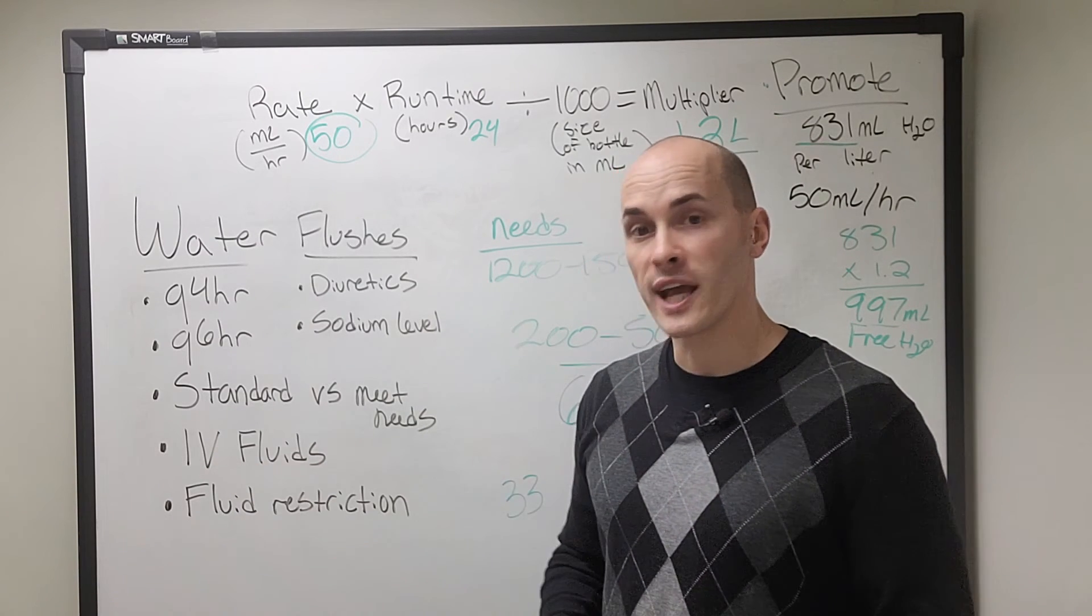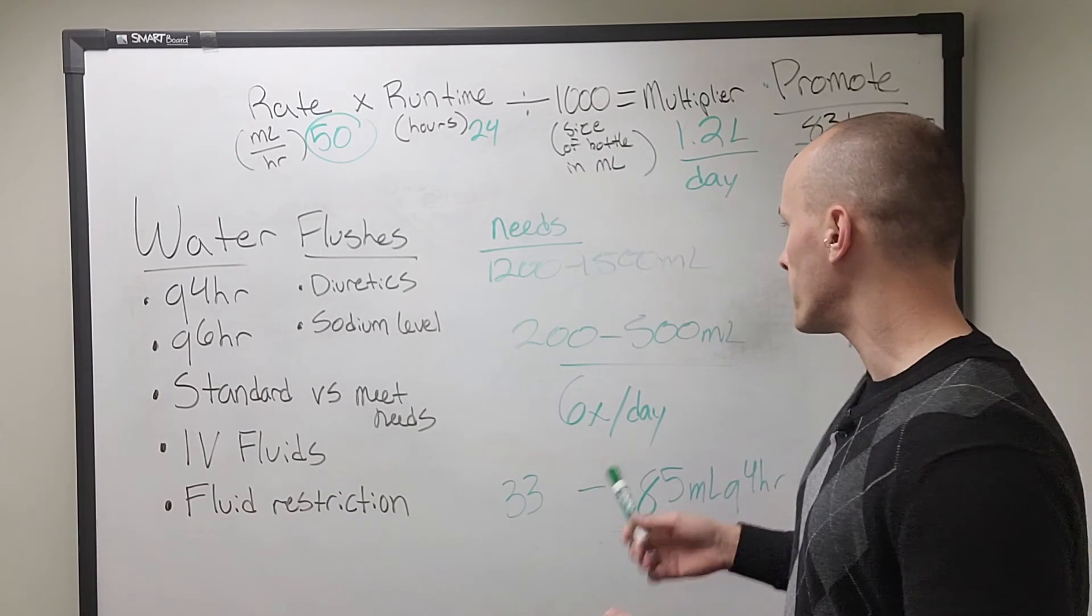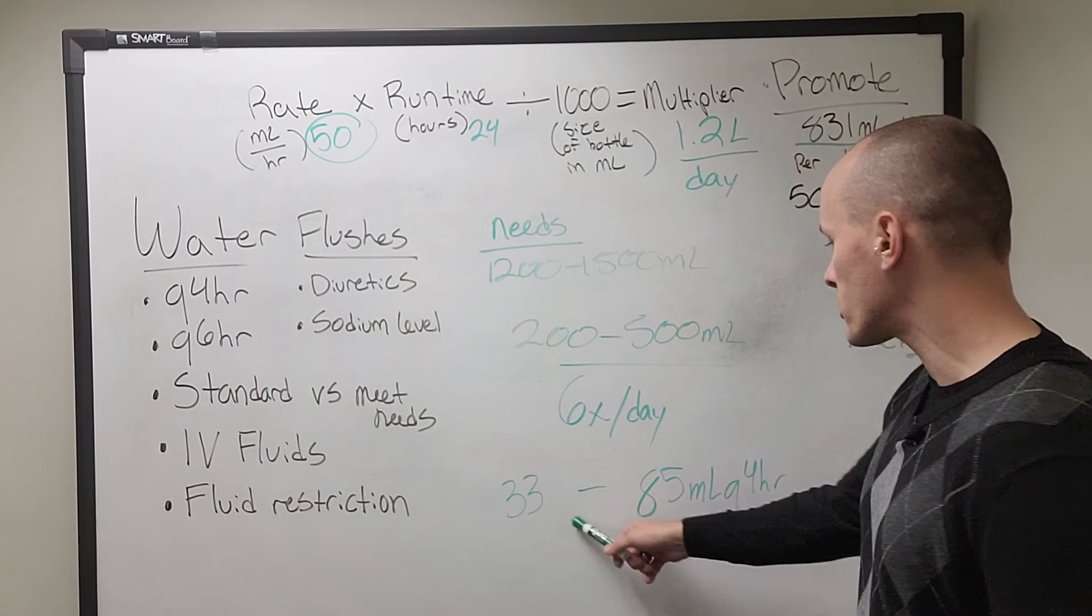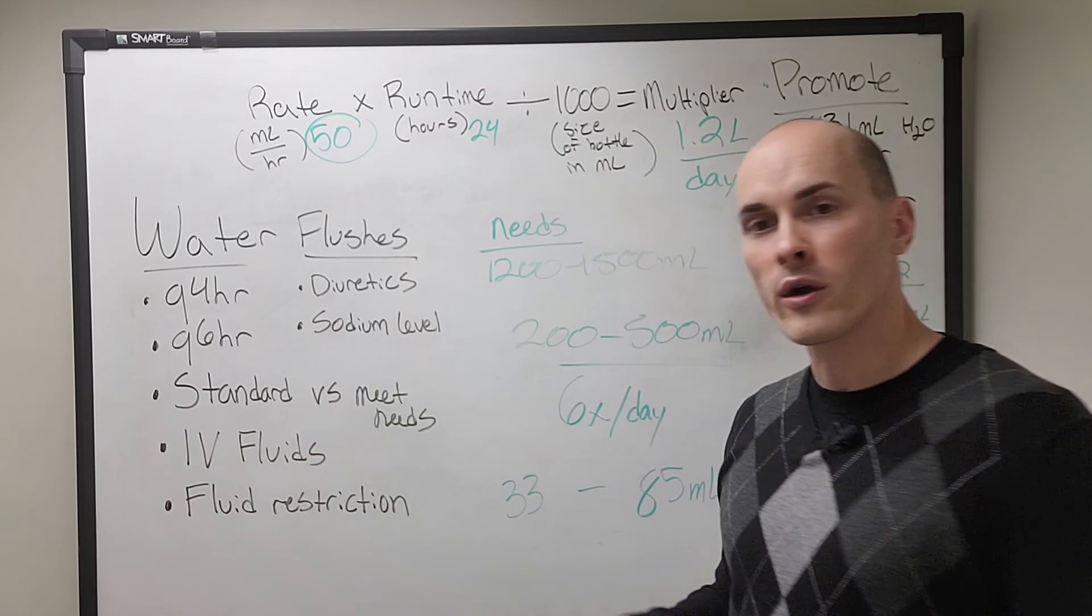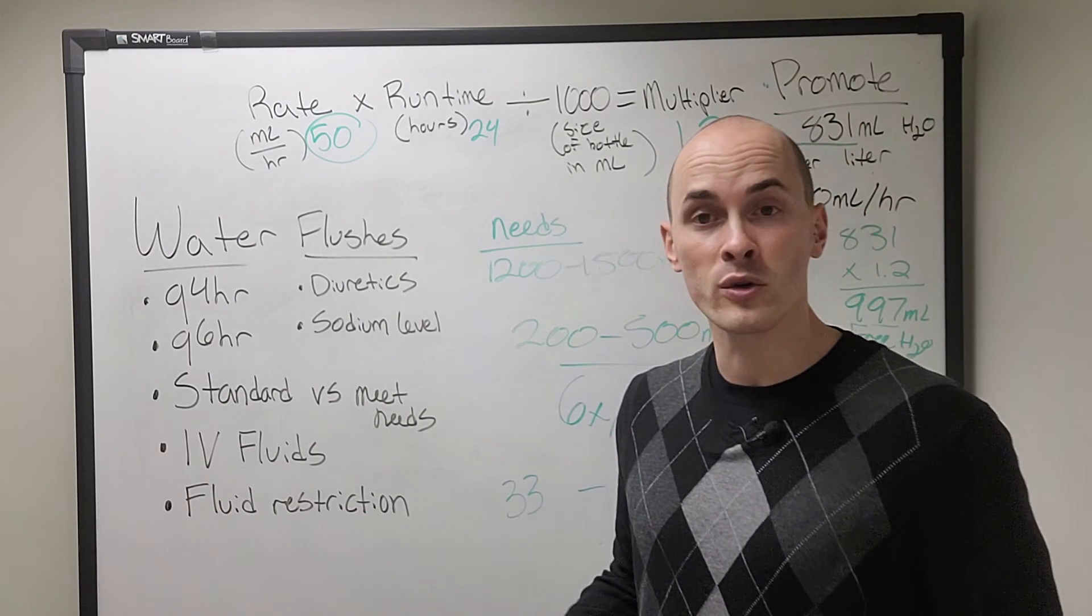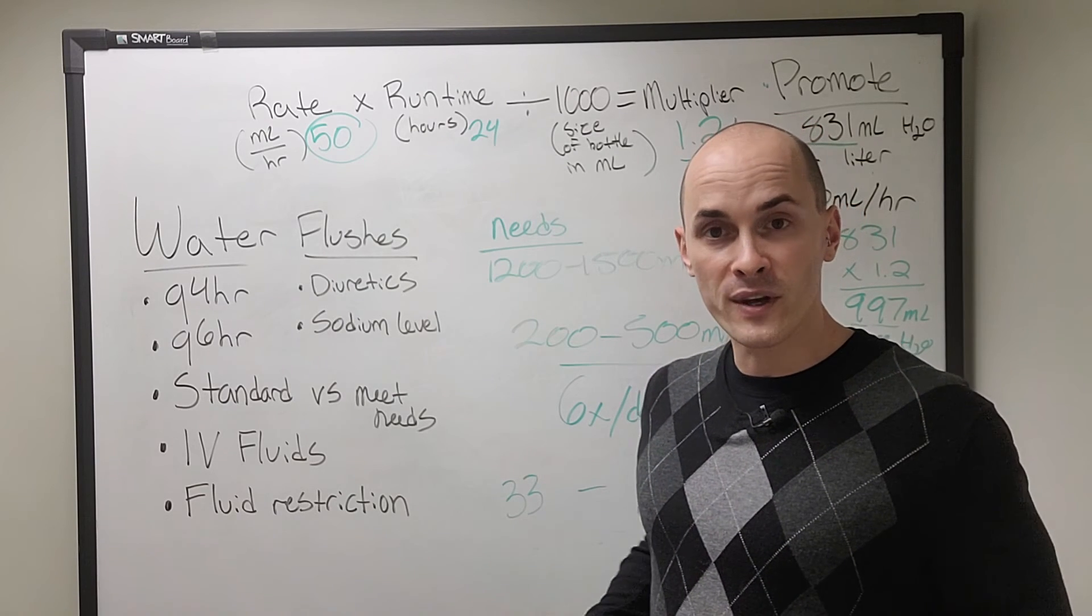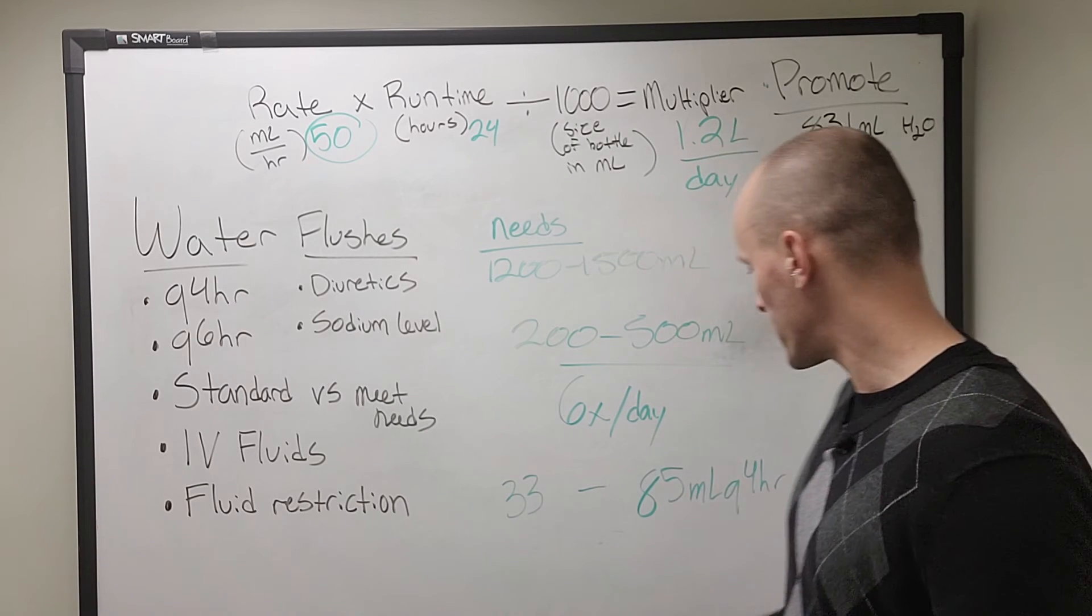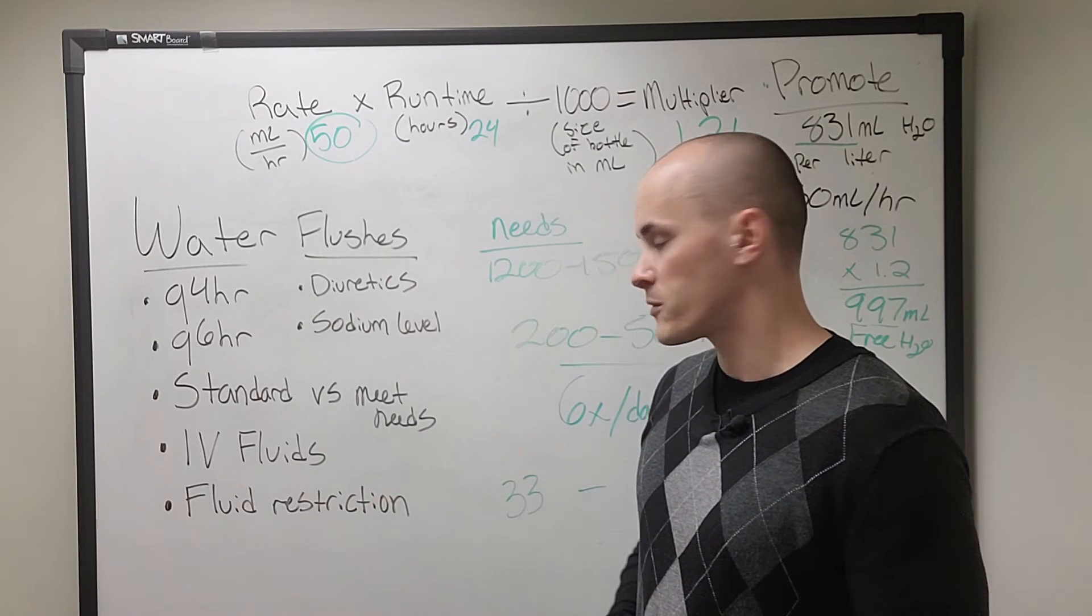As I mentioned earlier, we could do standard flushes or we could meet their needs. For this person, let's say they're NPO, but sips of water. Okay. And they're drinking a little bit of fluid. I'd be okay with our standard 60 mil flushes Q4 hours. Or if they're on the medical floor and they don't have a lot of IVs, and they're not getting a ton of additional fluid intravenously, and they're really relying on their feeding tube to give them all of their needs, then I'm actually going to meet their needs and give them 85 mils Q4 hours.